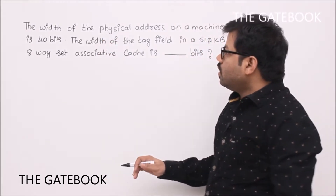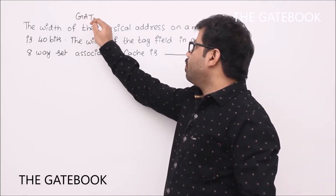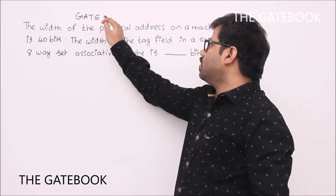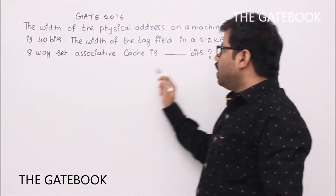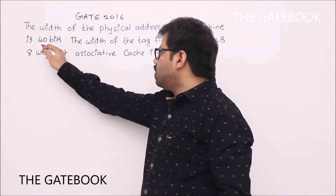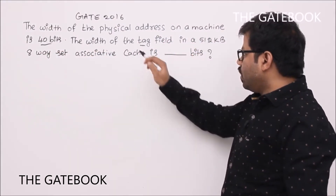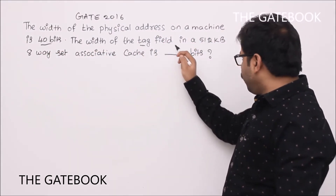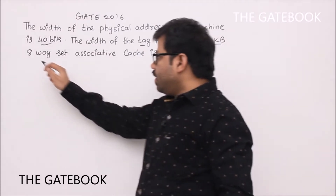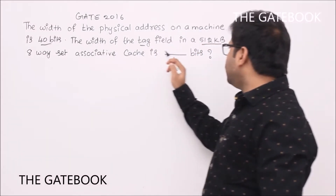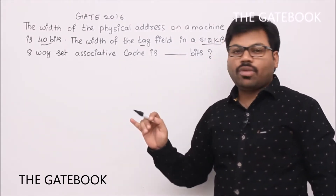This question is from GATE 2016. The width of the physical address on a machine is 40 bits. The width of the tag field in a 512 KB, 8-way set associative cache is how many bits? We need to find the number of tag bits.